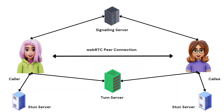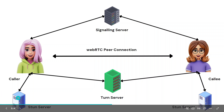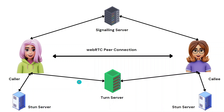Now you know this is not a one-step process — first there is a signaling server involved, then there is also a STUN server. Sometimes these two users won't be able to connect directly, meaning there are some limitations due to their internet connectivity or browser due to which a direct peer-to-peer connection won't be possible.